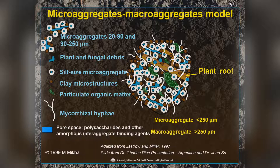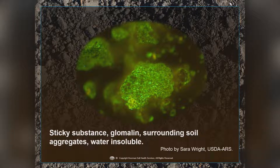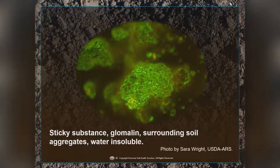Mycorrhizal fungi are very important — they supply a lot of the glomalin. Eighty percent of our plants are infected by these fungi, and they're very efficient at bringing water and nutrients back to the plant. Glomalin is a sticky, water-insoluble substance that surrounds the soil aggregates. So macroaggregates will shed water but also store water inside them, allowing water to flow through the soil. The glomalin essentially comes from the cellular components inside mycorrhizal fungi when they break apart.